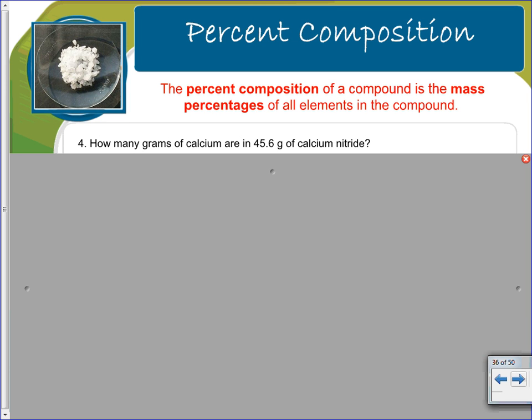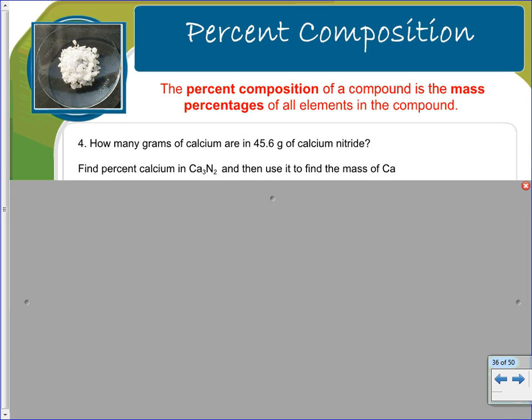So you should pause the video and try working this one. It says, how many grams of calcium are in 45.6 grams of calcium nitride? I would first write down calcium nitride, and I would try to find the percent of calcium and calcium nitride. If you cannot remember how to write the correct formula, you will not get this correct.